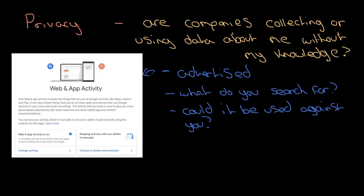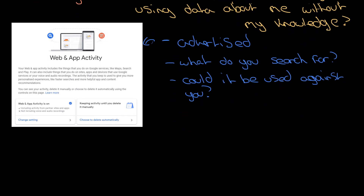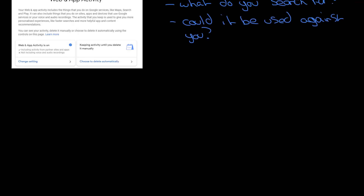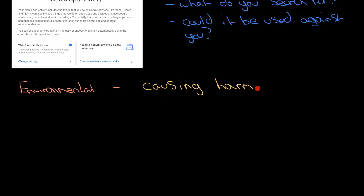When you use Google, you are giving them your data unless you specifically tell them to turn it off. The last thing we'll cover is environmental issues. There are all sorts of environmental issues thrown up by computers — this is all about causing harm to the natural world, and there are many examples of this.